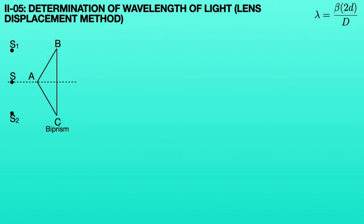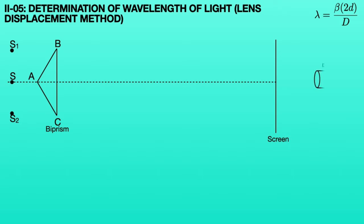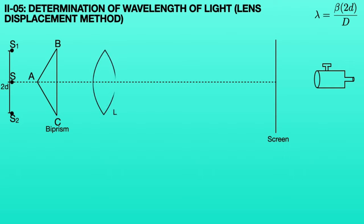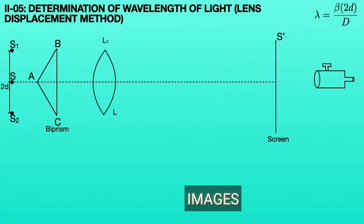Consider a principal axis passing through the center of the prism. The line perpendicular to the principal axis and very far from the biprism is called the screen. Assume a microscope at the back side of the screen to measure the fringe width beta. In order to measure the distance between the two virtual sources 2D, we need to consider a convex lens between the biprism and the screen. When the lens is at position L1, the images of virtual sources S1 and S2 are formed at S1' and S2' respectively on the screen.